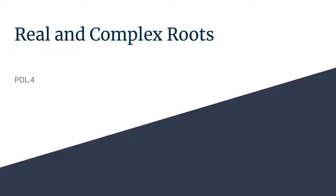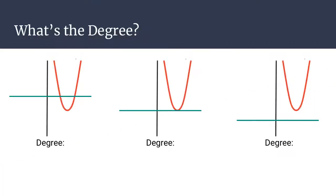In this video, we're going to be focusing on real and complex roots that can come just by looking at the graph itself. We start with a basic parabola, and we know that all parabolas have the basic form of y equals ax squared plus bx plus c. Based on that, we should know that the degree for each of these is equal to 2.